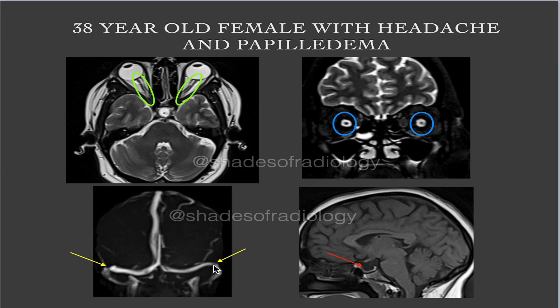You can see the narrowing, which is a typical finding, and you can see the empty sella. Presence of empty sella, prominent dilated tortuous optic nerves with dilated subarachnoid space, and bilateral transverse sinus narrowing — all these features suggest benign intracranial hypertension. There was no other mass lesion in the brain parenchyma or posterior fossa. This is a classic case of benign intracranial hypertension.